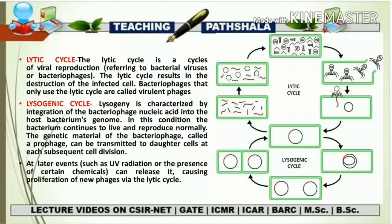Let's get started with today's topics. Before knowing the factors important behind a lytic and lysogenic decision, first we should know what the lytic cycle and lysogenic cycle are. The lytic cycle is a cycle of viral reproduction, mainly referring to bacterial viruses or bacteriophage. The lytic cycle results in the destruction of the infected cell, and bacteriophages that only use the lytic cycle are called virulent phage.